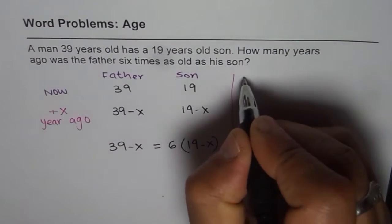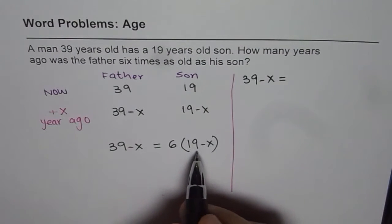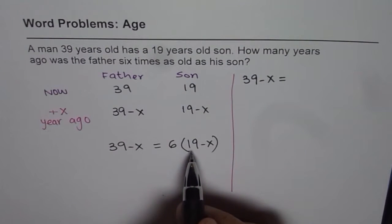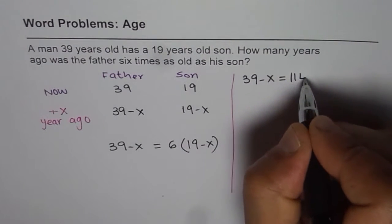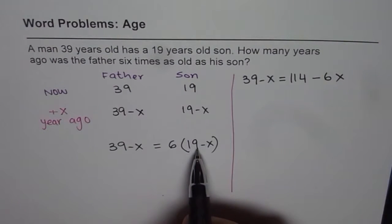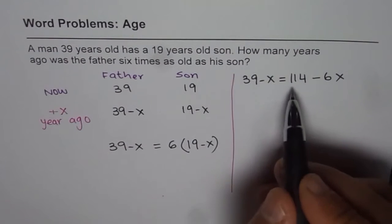So we get 39 minus x equals 6 times 19. 6 times 20 is 120, take away 6 from 120, you get 114 minus 6x. Or 6 times 9 is 54, 5 plus 6 is 11. So that is how you get it.